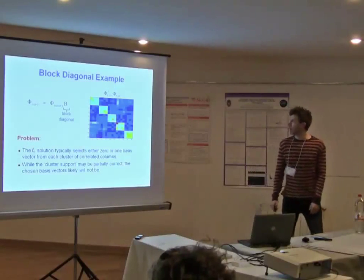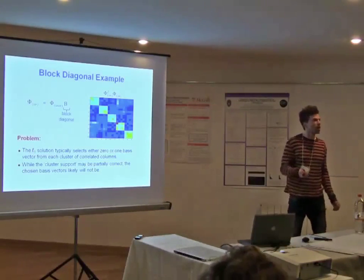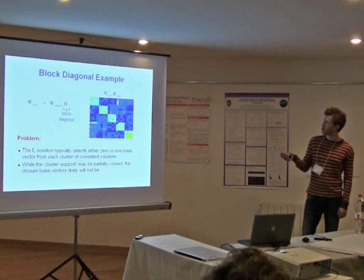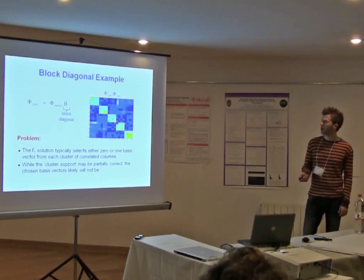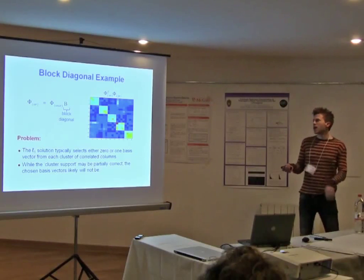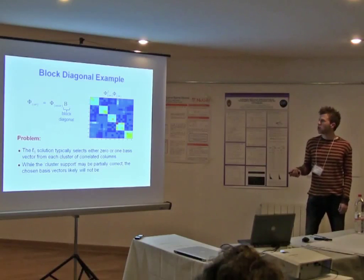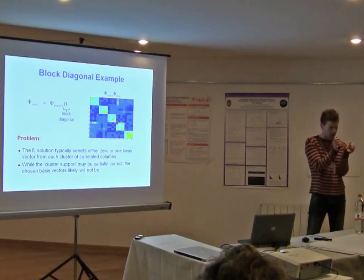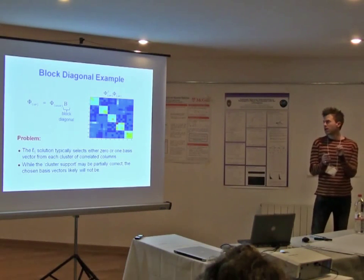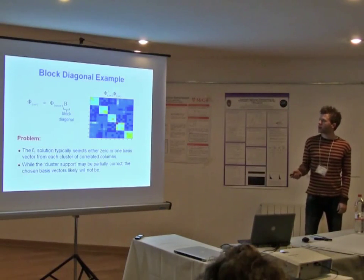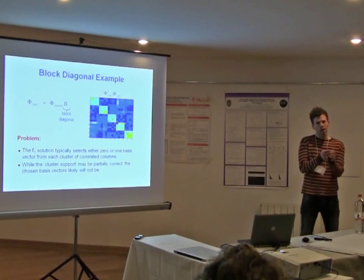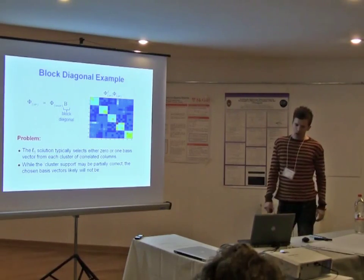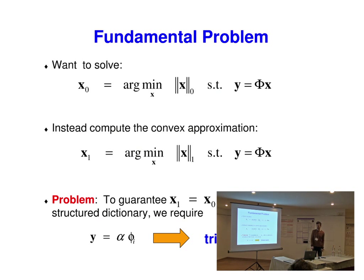Here's a block diagonal example to show how this can cause a problem for regular L1 minimization. You take a Gaussian IID dictionary and multiply it by a block diagonal matrix. When you look at these inner products, you have big blocks of correlations along the diagonal. What typically happens: if you want to solve for the maximally sparse solution, the L1 solution will select zero or at most one basis vector from within each of these blocks. From all these correlated basis vectors that form a little cluster, it will pick one — maybe the right one, maybe not. The cluster support might be mostly correct, but the chosen basis vectors within the cluster will typically be wrong.